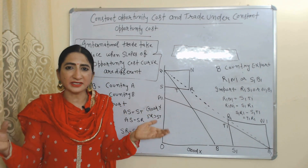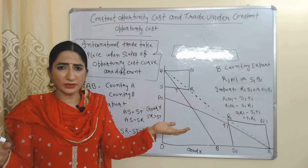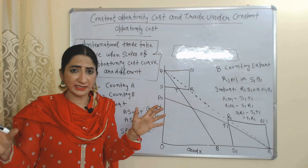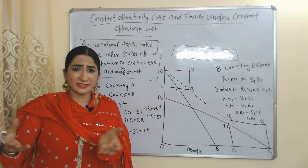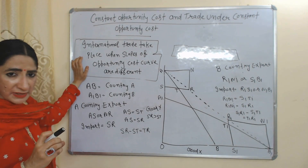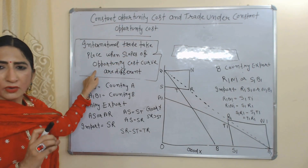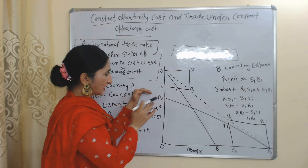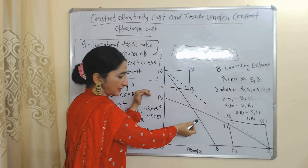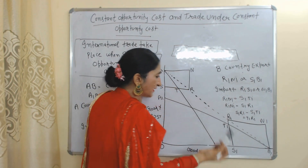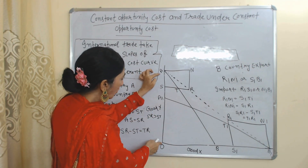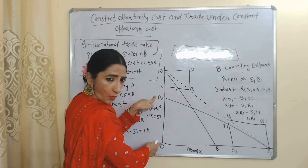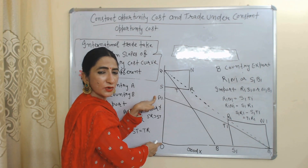Now we will see international trade under constant opportunity cost. We assume we have only two countries, A and B. If the slope of the opportunity cost curve is the same in both countries, there is no international trade — there is no gain from trade. But international trade takes place when the slopes of the opportunity cost curves are different in both countries. In this diagram on the x-axis we have X good and on the y-axis we have Y good. Country A can produce OA quantities of Y but country B can only produce OA1 quantities of Y — OA is more than OA1.